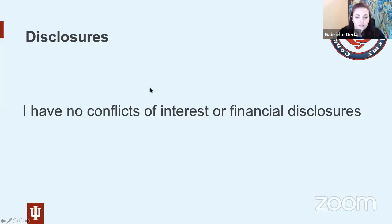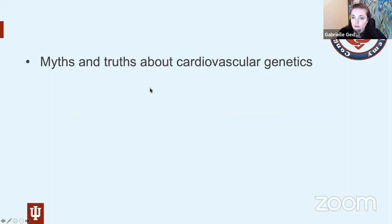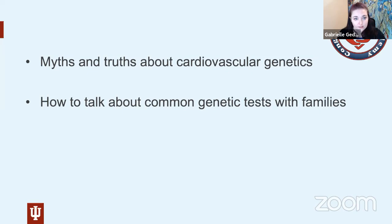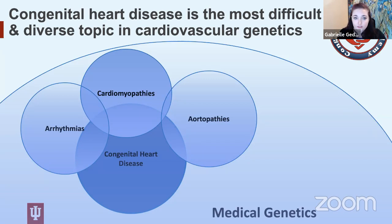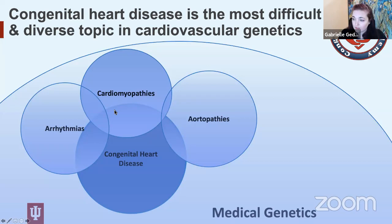We're going to start with some myths and truths about cardiovascular genetics, then go over how to talk about common genetic tests with families, and then spend most of the time on our midwestern cardiogenetics program experience. Just as Dr. Baban said, cardiogenetics is a small section of medical genetics, but within it the genetics of congenital heart disease is the most difficult and diverse topic — something we could spend many days discussing.